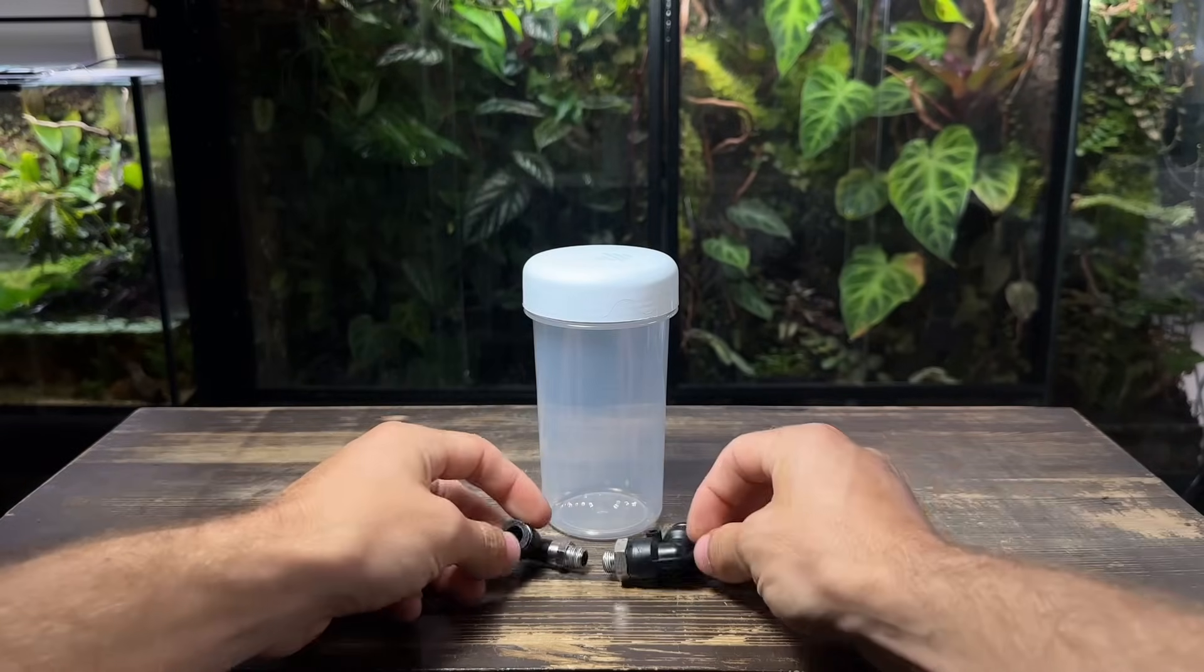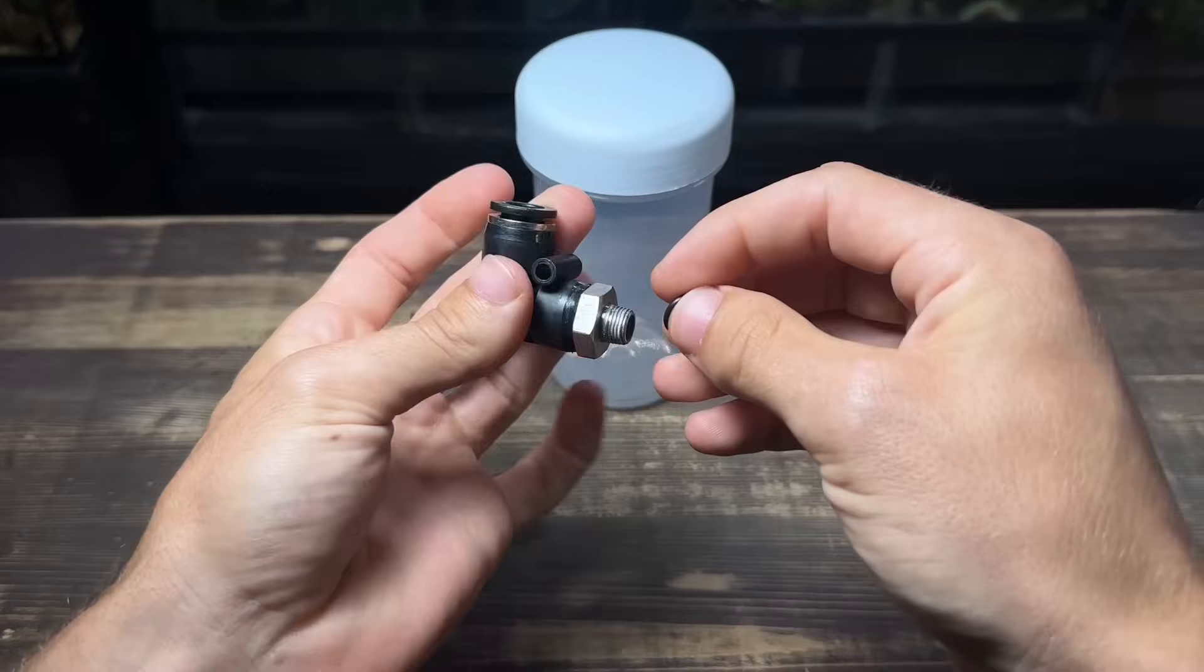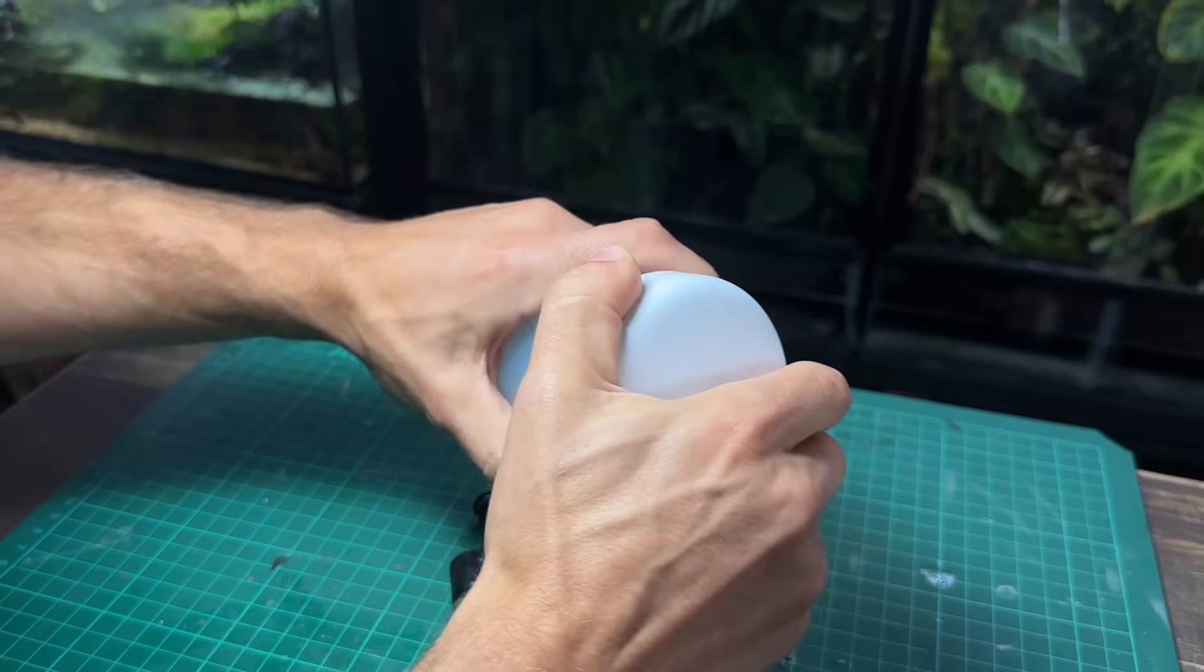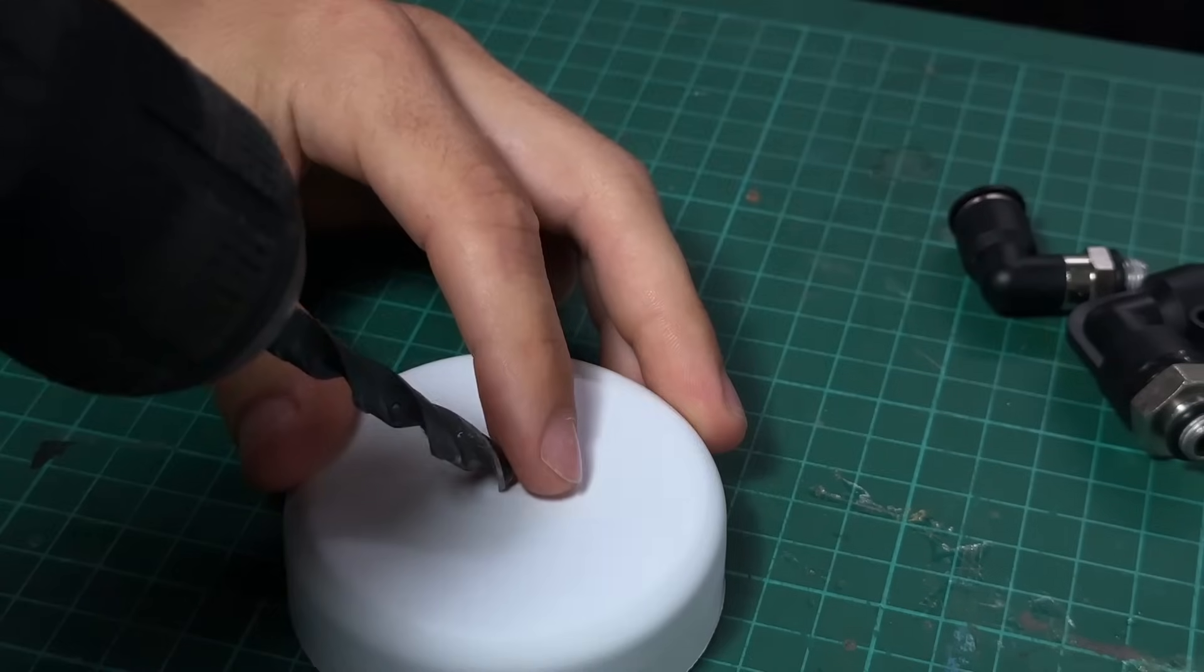Now let's start making the filter. I'll start by pushing the o-rings onto the end of the push fittings. Next I need to make some holes so I'm going to place down a cutting mat so I don't destroy my desk. The first hole I'm going to make is in the lid which is where the water will flow into.